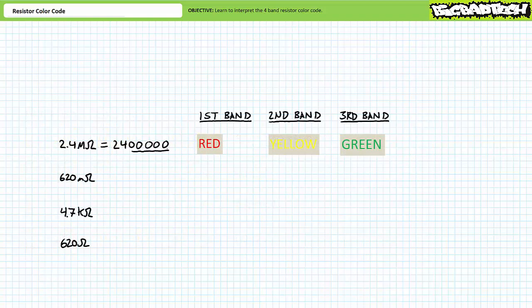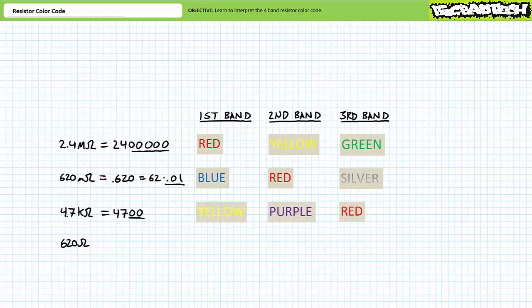Let's now take a look at the second set. 2.4 mega-ohms is 2,4, followed by 5 zeros. 2 is red, 4 is yellow, 5 is green. 620 milli-ohms is 0.62, which is 62 times 0.01. 6 is blue, red is 2, and multiplication by 0.01 is silver. 4.7 kilo-ohms is 4,7, followed by 2 zeros. 4 is yellow, 7 is purple, and 2 is red. Finally, 620 ohms is 62, followed by 1,0. 6 is blue, 2 is red, and 1 is brown.